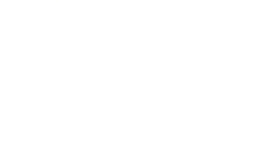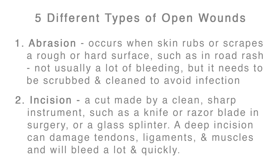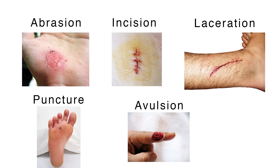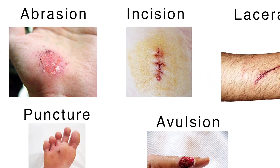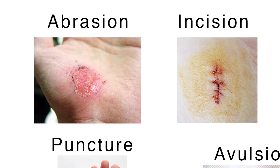There are five different types of open wounds classified according to their cause. First, abrasion occurs when skin rubs or scrapes a rough or hard surface, as in road rash. There is not usually a lot of bleeding, but it needs to be scrubbed and cleaned to avoid infection.